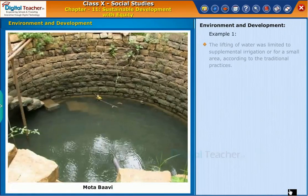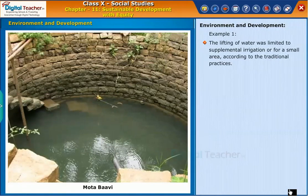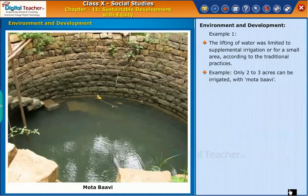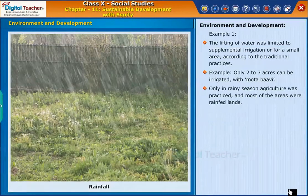Example one. According to traditional practices, the lifting of water was limited to supplemental irrigation or for a small area. For example, only two to three acres can be irrigated with a Mata Bavi. Only in the rainy season was agriculture practiced, and most areas were rain-fed lands.